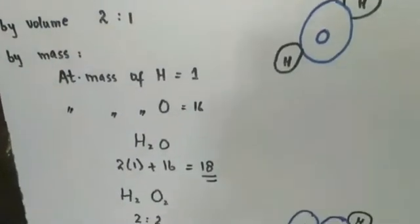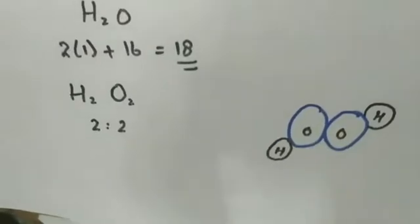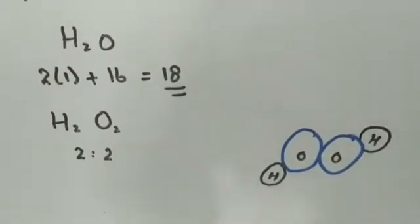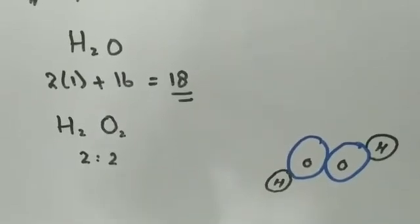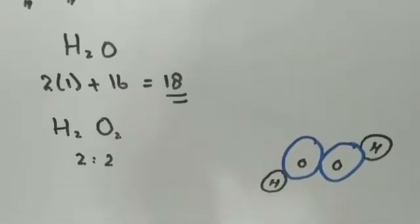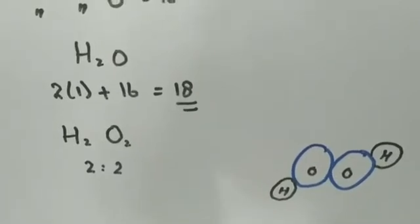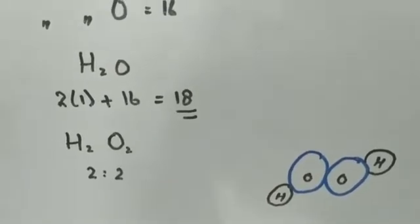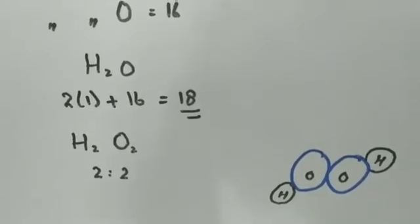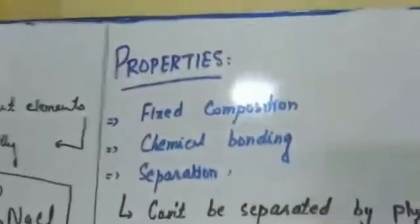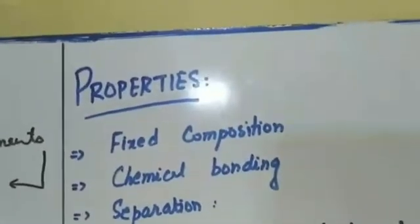If we disturb this ratio — for example, taking two hydrogens with two oxygens — the ratio is disturbed. Two oxygens combining with two hydrogen atoms is no more water; it will have completely different properties from water. It is a compound but not water — it is called hydrogen peroxide.